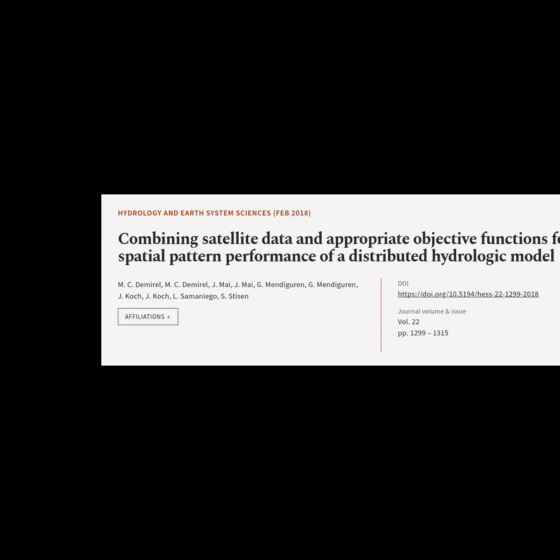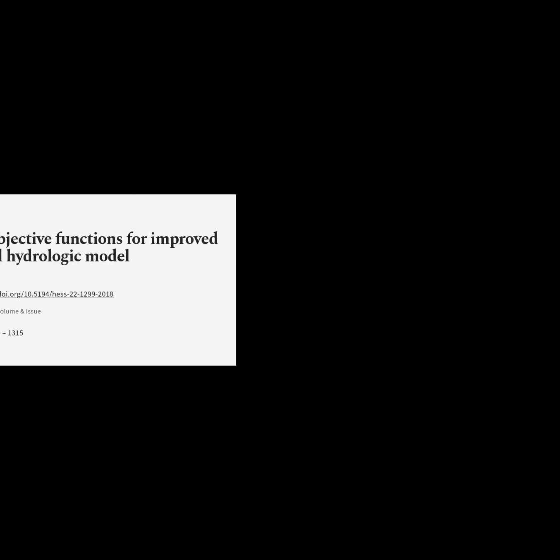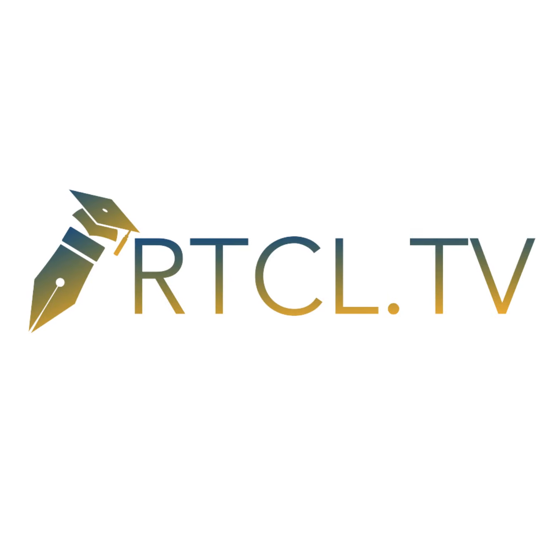This article is titled "Combining Satellite Data and Appropriate Objective Functions for Improved Spatial Pattern Performance of a Distributed Hydrologic Model" and was authored by C. Demural, Mai, Mandigurin, Koch, and others. We are article.tv.